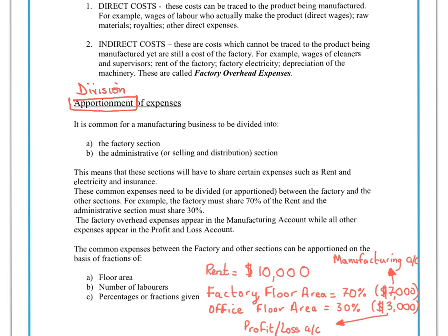Here's a quick example: the rent for the year is $10,000. The question tells us the factory floor area is 70% and the office floor area is 30%. So 70% of $10,000 is $7,000 — that portion goes into the manufacturing account. The remaining $3,000 goes into the profit and loss account as a rent expense for the office areas, covering the marketing team, director, secretary, admin, and finance.